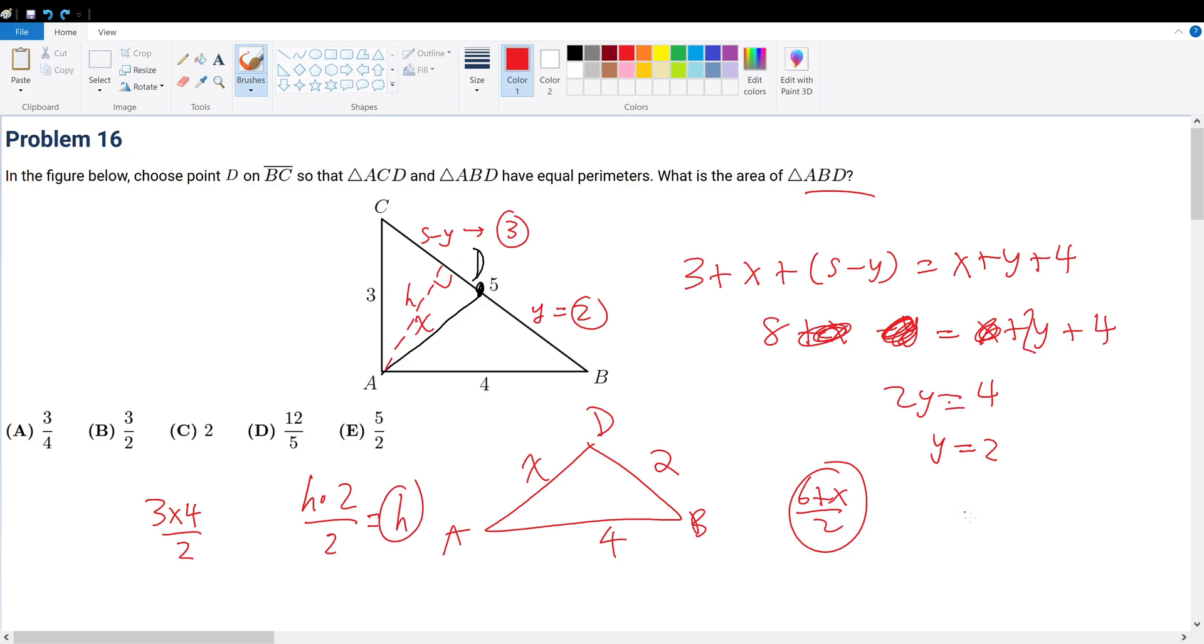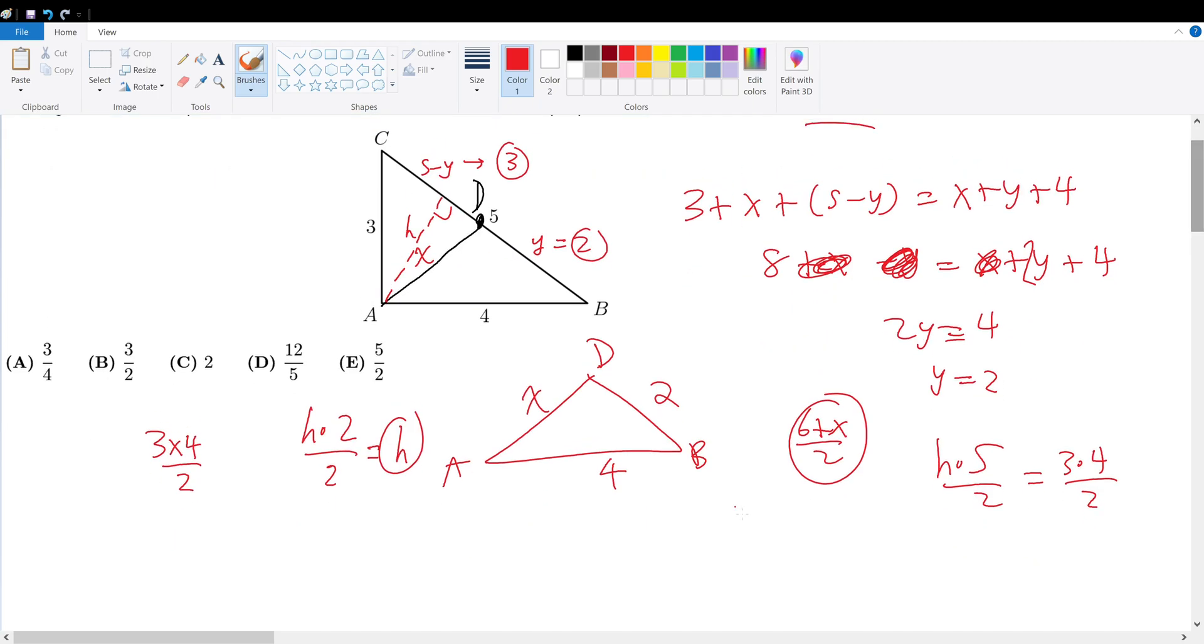But what is H height? Well, we know that H times 5 divided by 2 must give 3 times 4 divided by 2, because it's just two ways to solve for the same area. So that means 2 and 2 cancels. H must be equal to 12 over 5.